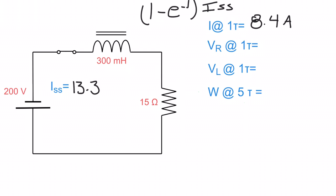To walk this through: if I've got 8.4 amps flowing through the circuit, that means I've got 8.4 amps going across this 15 ohm resistor. So to get the resistor voltage, I do 8.4 amps times 15 ohms, which gives me 126 volts at the first tau.